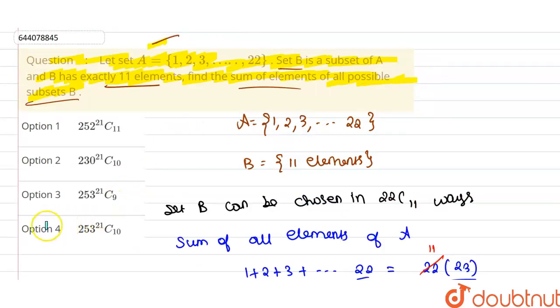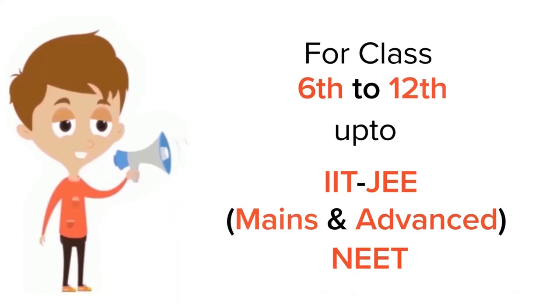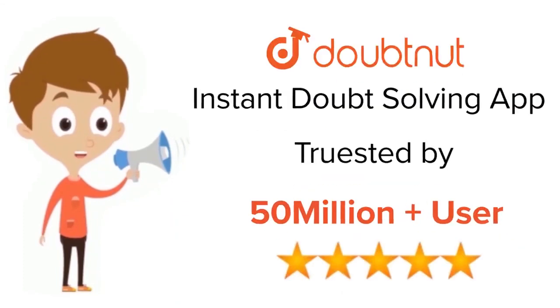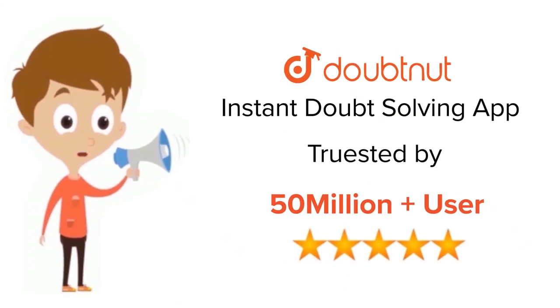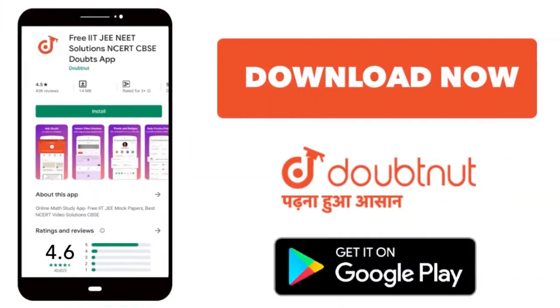So checking the options, we get option 4: 253 × C(21,10). Option 4 is our right answer. Thank you. For class 6 to 12, IIT JEE and NEET level — trusted by more than 5 crore students — download DoubtNet today.